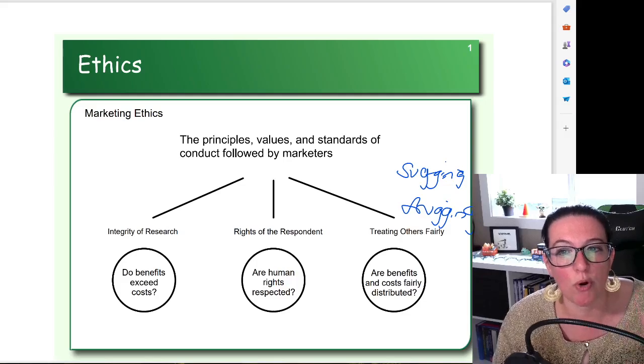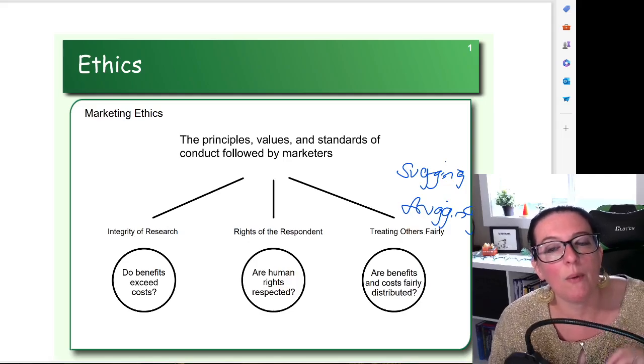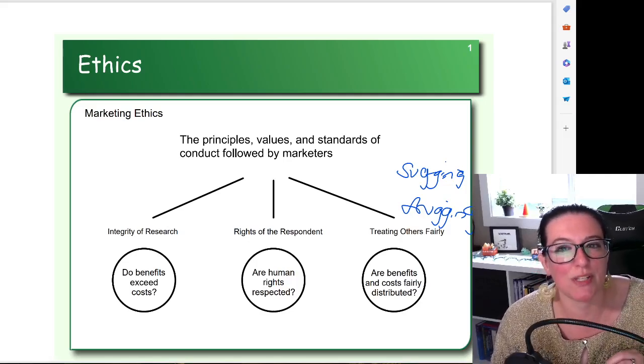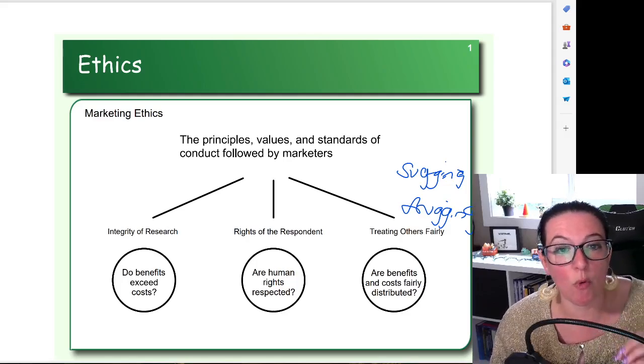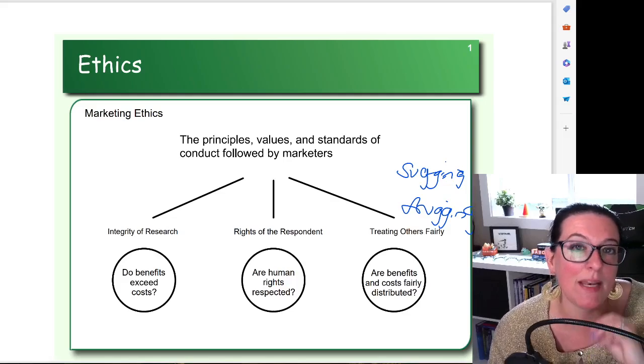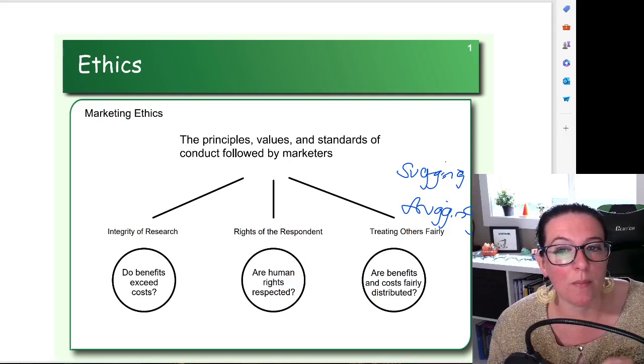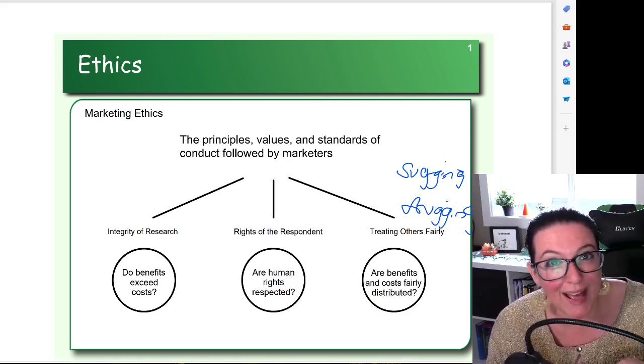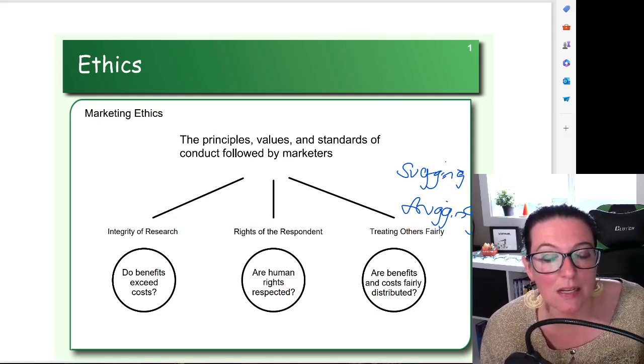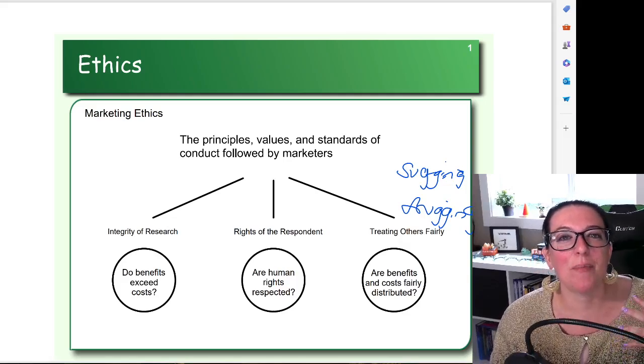We're doing ethical research. We need to make sure that the research process has integrity, that the benefits of doing it outweigh the costs, and that we've protected the rights of those participants. We are respecting them and their right to informed consent, anonymity, confidentiality. We have made sure that we are not putting them at too great of a risk.